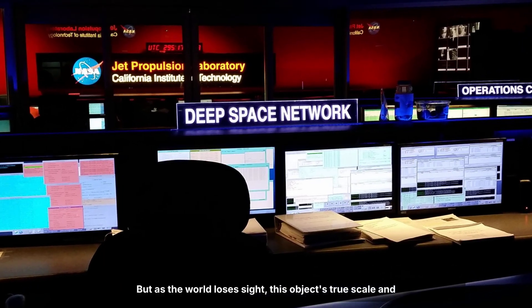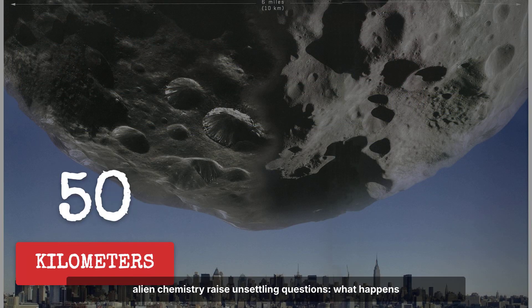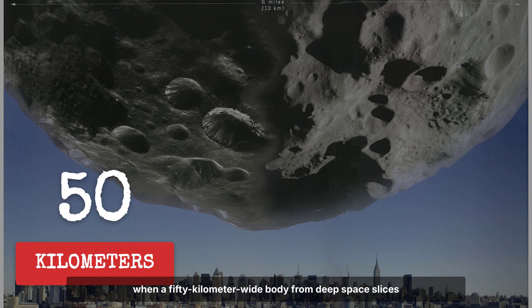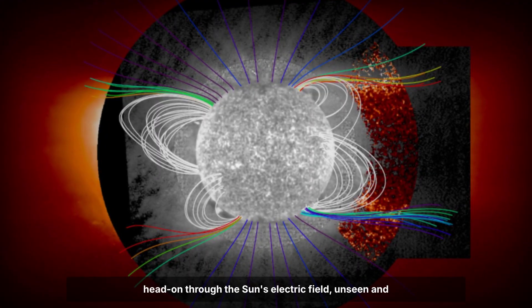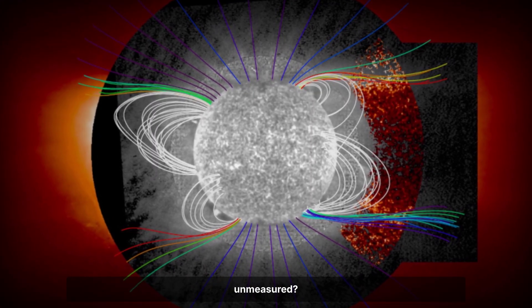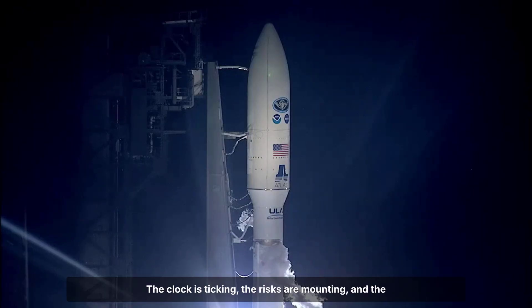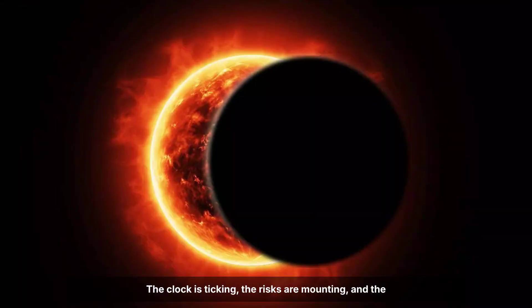But as the world loses sight, this object's true scale and alien chemistry raise unsettling questions. What happens when a 50-kilometer-wide body from deep space slices head-on through the sun's electric field, unseen and unmeasured? The clock is ticking, the risks are mounting, and the biggest mysteries start the moment Atlas vanishes from view.